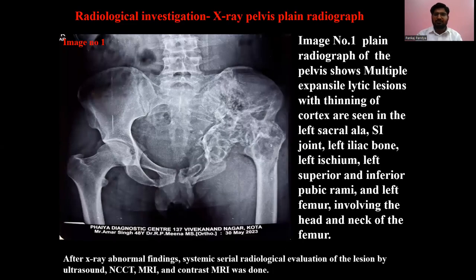The radiological investigations: X-ray pelvis plain radiogram image number one shows multiple osteolytic lesions with thinning of cortex seen in the left sacral area, SI joint, left iliac bone, left ischium, left superior and inferior pubic rami, and left femur involving the head and neck of the femur.